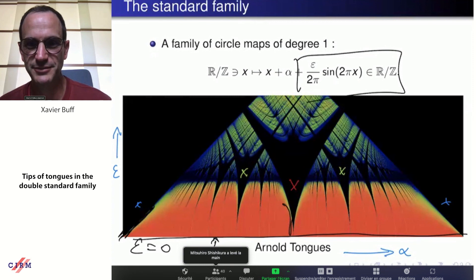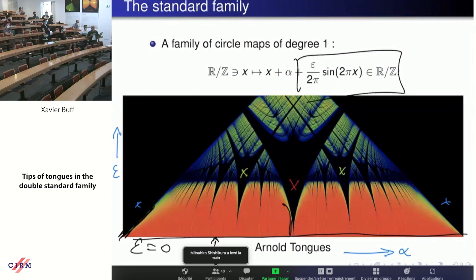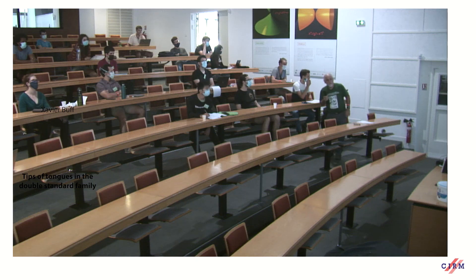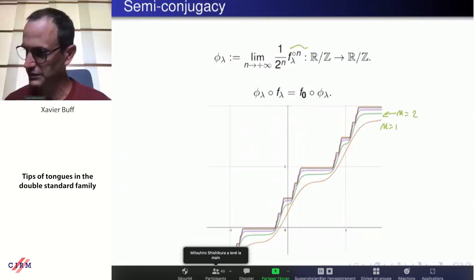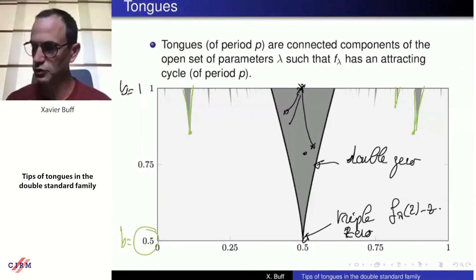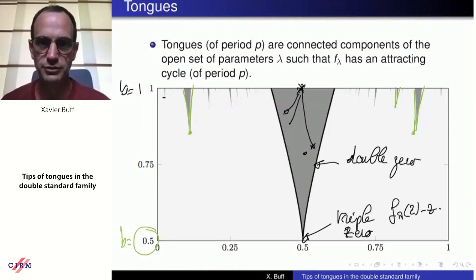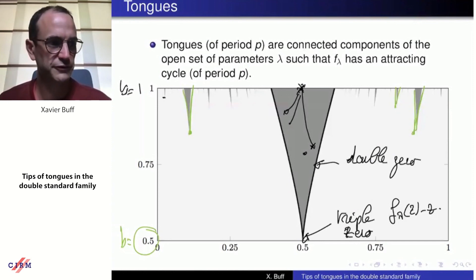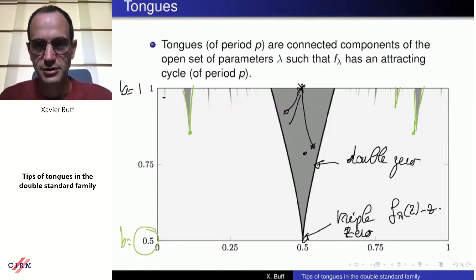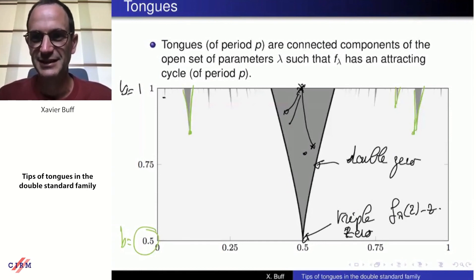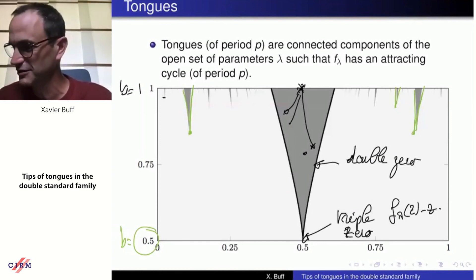A question about the size of the tongues: does the tip of the tongue go to the top as the period increases? The speaker thinks the height of the tongue tends to one as the period tends to infinity, but is not 100% sure of the proof or whether it is known. The rate at which it goes to infinity is likely not known. The speaker has not made numerical experiments on this.